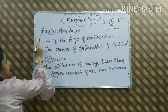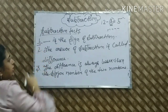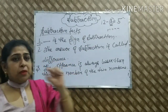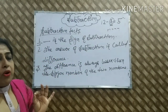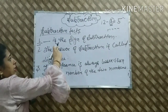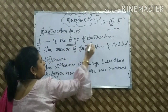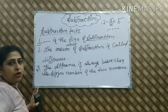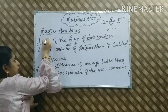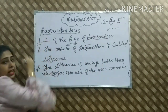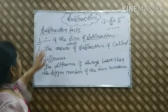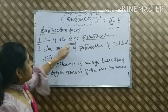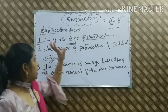We have the first point of subtraction facts. Dash ( – ) is the sign of subtraction. It is very important that we need to know what the sign of subtraction is. The minus ( – ) is the sign of subtraction.